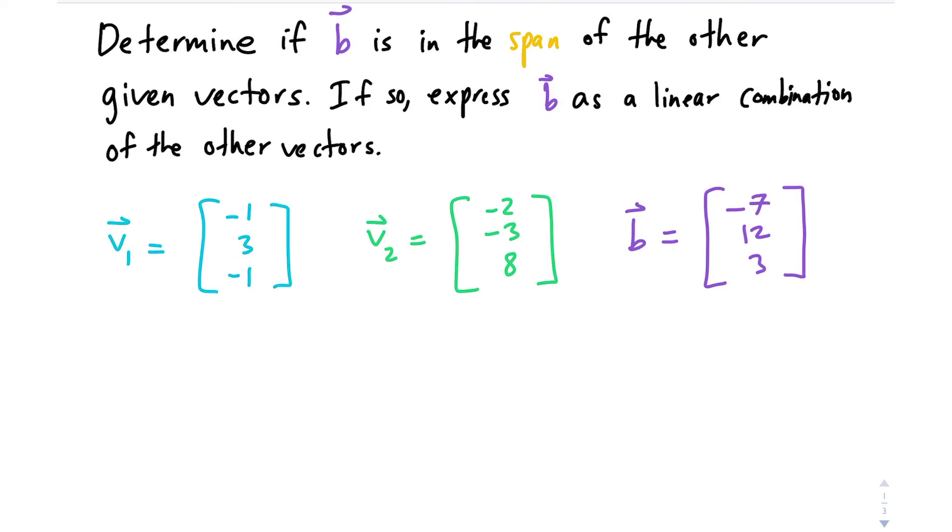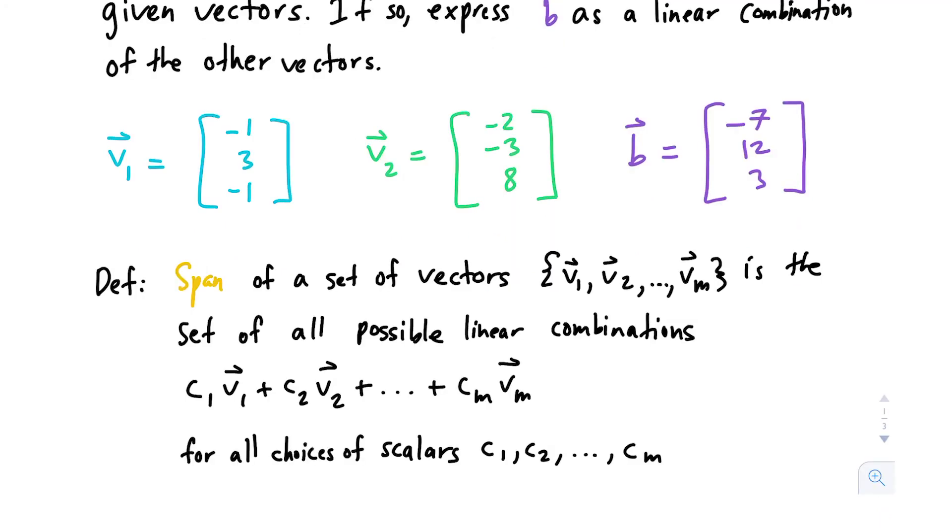Let me pull up the definition of span real quick. We say that span of a set of vectors v1 through m vectors is defined as the set of all possible linear combinations: c1 times v1 plus c2 times v2, etc., all the way up to cm times vm, for all choices of scalars c1, c2, etc.